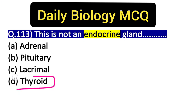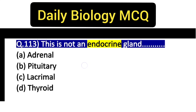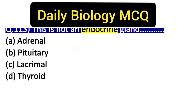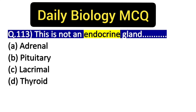The thyroid gland is present in your throat. The thyroid hormone is released from this gland, and it is very important for the synthesis of iodine — this is a commonly asked question.